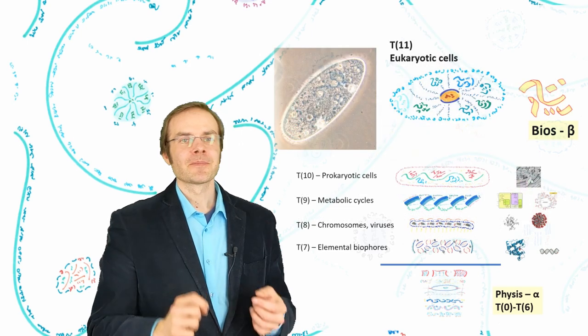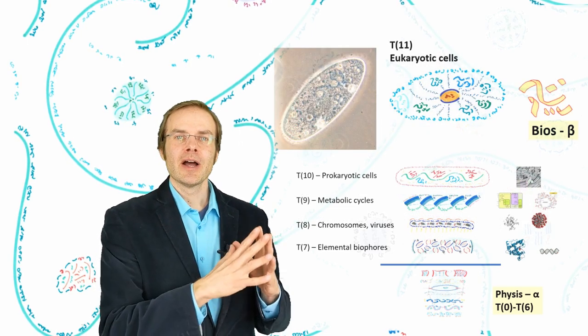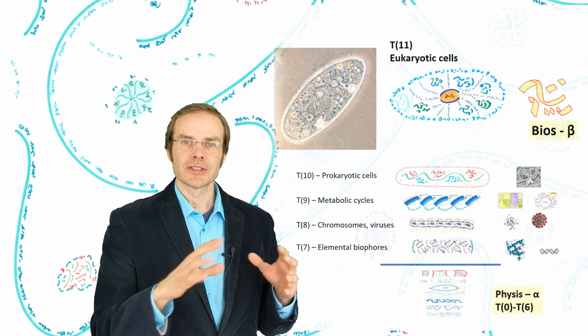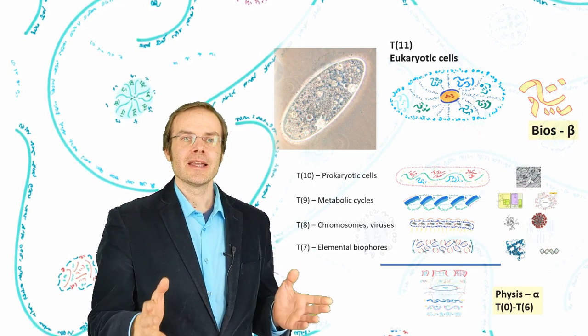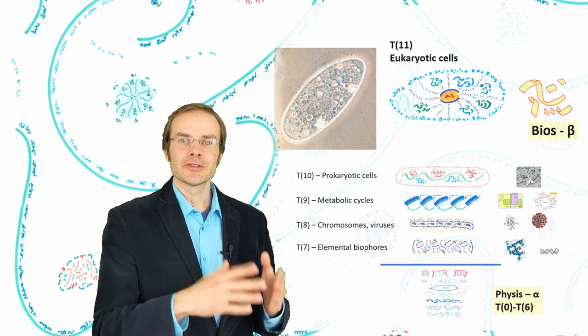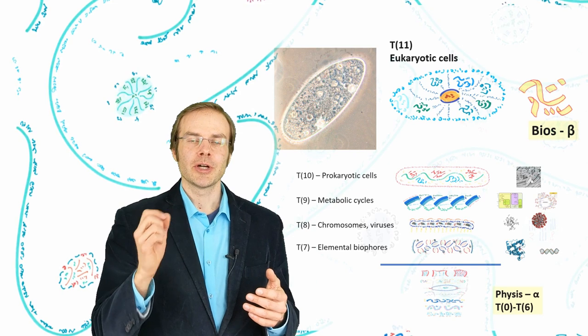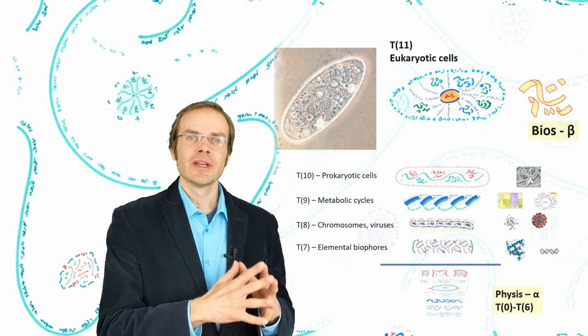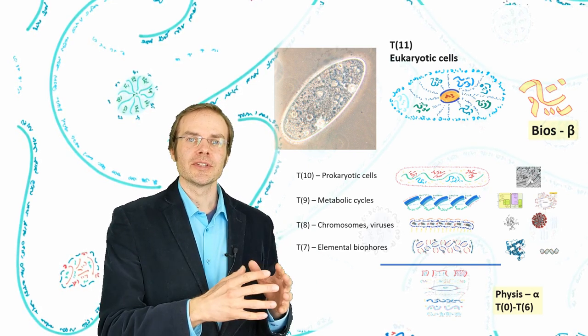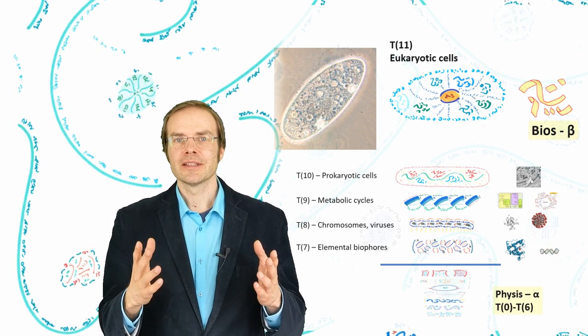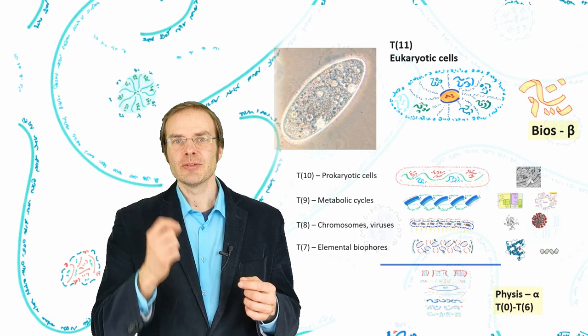Totality 11 then is of course the realm of the eukaryotic cells, which contain a cell nucleus, which houses the chromosomes. And they also contain things like chloroplasts or mitochondria, which are actually remnants of prokaryotic symbionts.